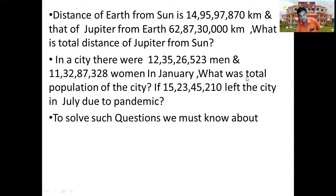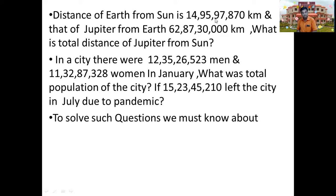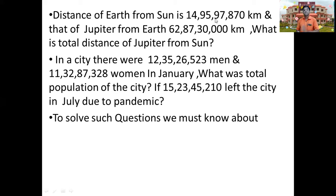In a city there are 123,526,523 men and 113,287,328 women in general. What is the total population of the city? For that we have to add the number of men and women. Now if 152,345,210 people left the city in July due to the pandemic, what is the remaining population of the city? In this case we have to subtract 152,345,210 from the previous total. For that you should know about the addition and subtraction of large numbers.